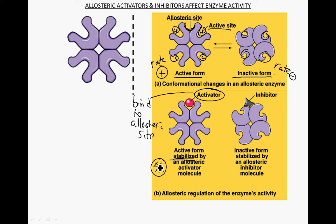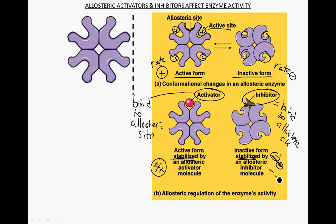Along those same lines, inhibitors can also bind to the allosteric site — not the active site — and stabilize the enzyme in an inactive conformation, greatly reducing the rates of reaction. So allosteric activators speed up enzyme rates, and allosteric inhibitors slow down enzyme rates.